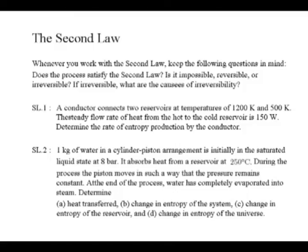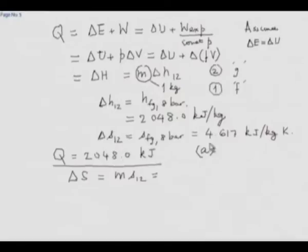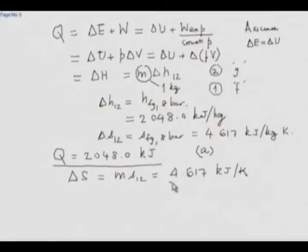What was the second part of the question? Change in entropy of the system - that is simple. Delta S of the system = M × s_fg = 4.617 kJ/K. Notice that the unit of entropy is unit of energy divided by unit of temperature: kJ per Kelvin. So that is answer B.